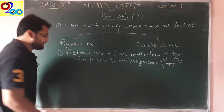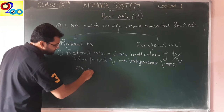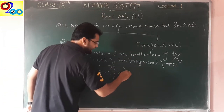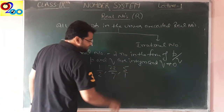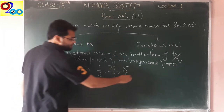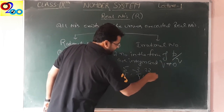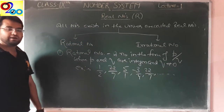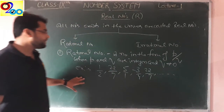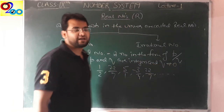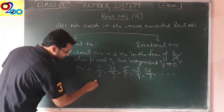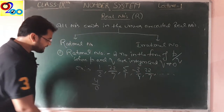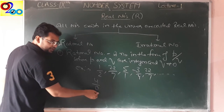For example: one by two, twenty-two by seven, and even 5 alone is a rational number because the denominator 1 is already hidden. Minus three by four, twenty-two by seven — all of these are rational numbers. But the important condition is that the denominator cannot be zero. The reason is: four divided by zero is not possible.